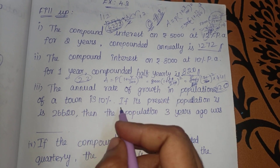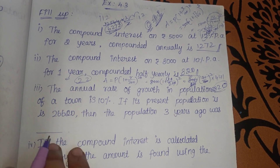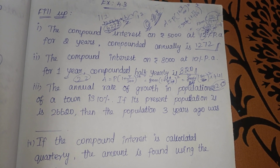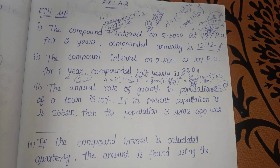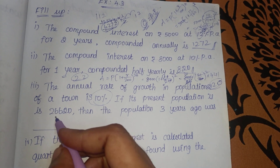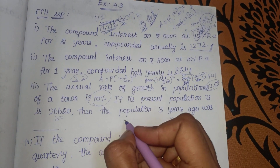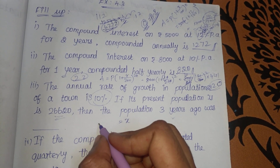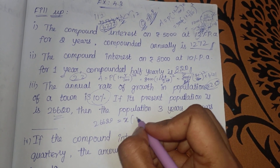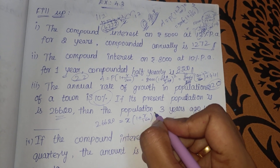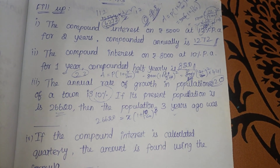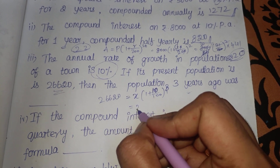The annual rate of growth in population of your town is 10%. If the present population is given, 3 years later what is the population? So the formula is P into 1 plus R by 100 the whole power N. So 3 years, rate of interest is 10%. So we can see X into 1 plus 10 by 100, cancel: 10 plus 1 is 11.